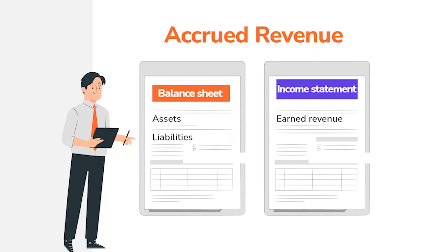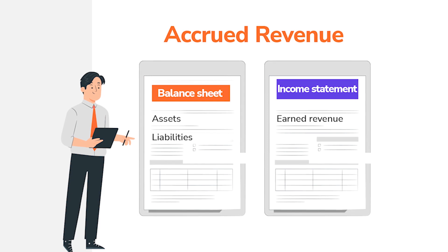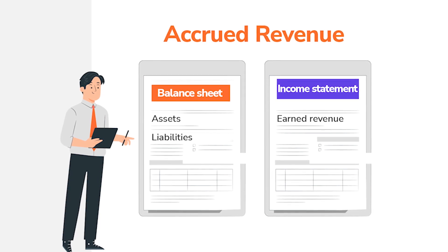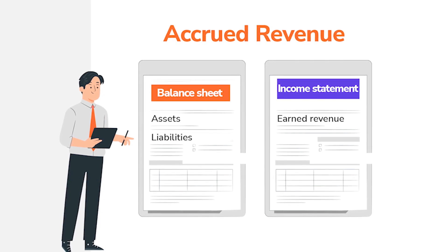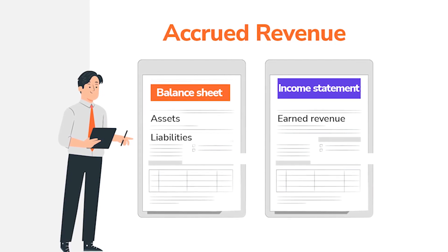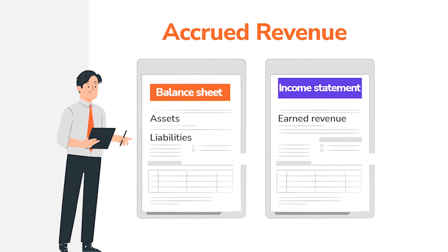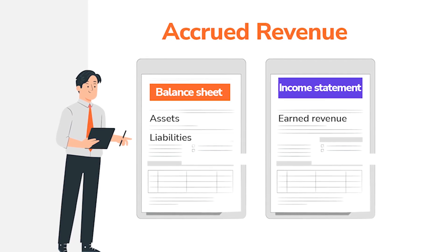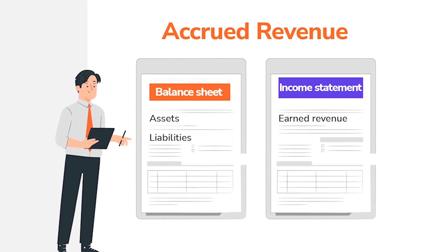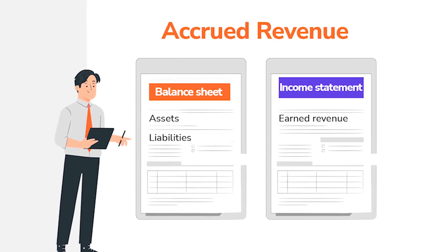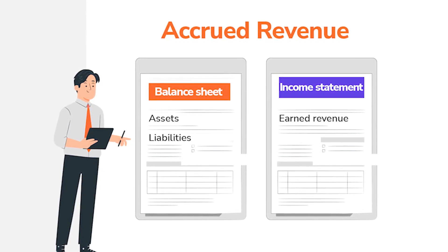We'll start with accrued revenue. Accrued revenue is a double-entry method of accounting. This means any accrued revenue payment is recorded in two different ways: the first is on your balance sheet as an adjusting journal entry, and the second is on your income statement as earned revenue.